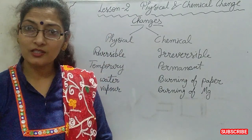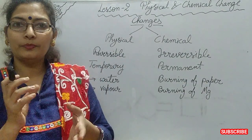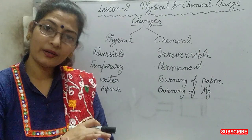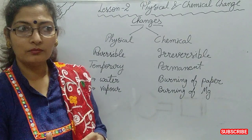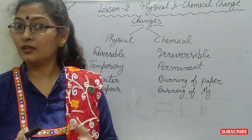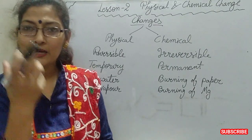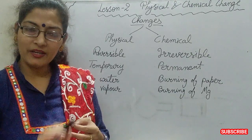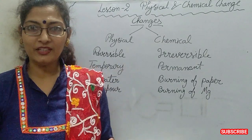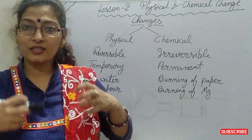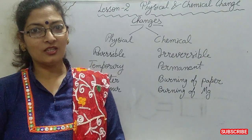Chemical change is a permanent change. Suppose you are burning magnesium — can you get it back as it was? No. If you burn a piece of paper, can you get the paper back? No. This is the chemical change — a permanent change. When you burn a firework, can you get it back? No. The changes that occur inside cannot come back, so these are irreversible changes — chemical changes.